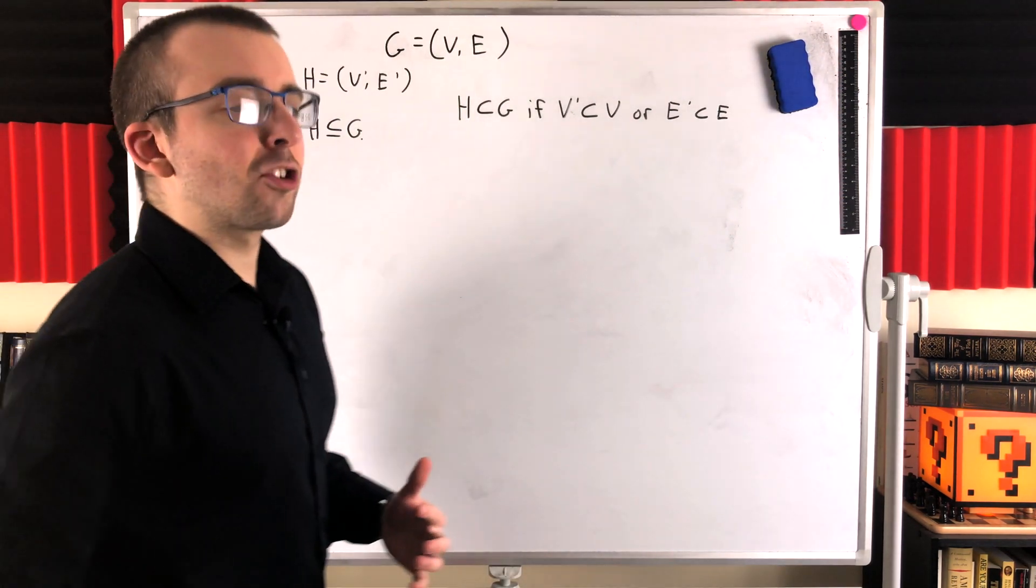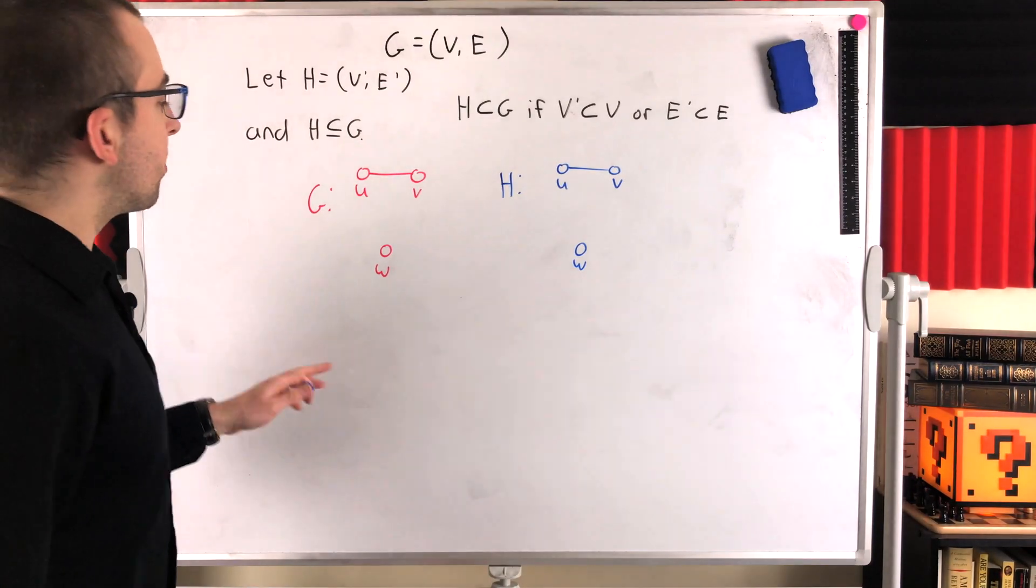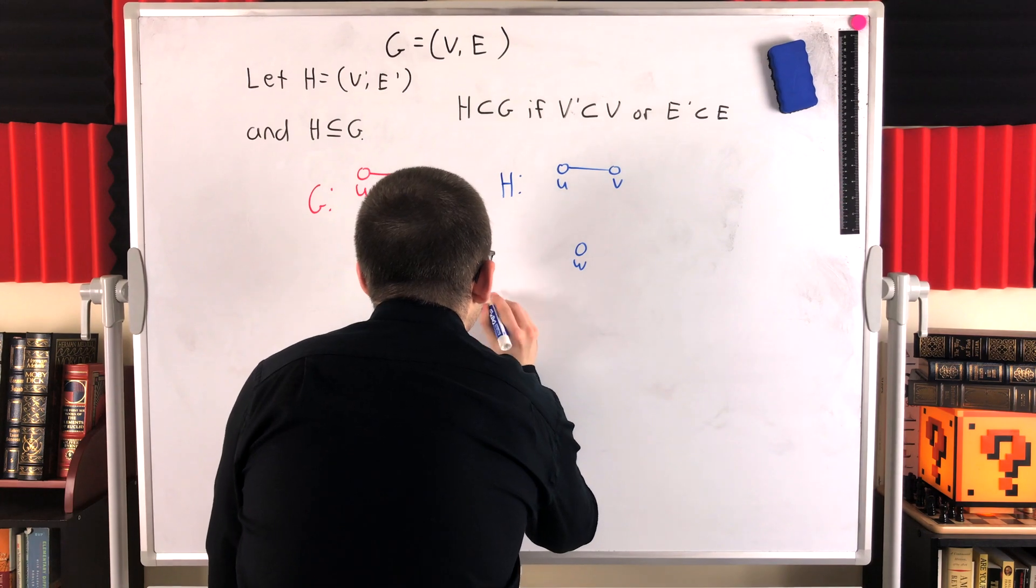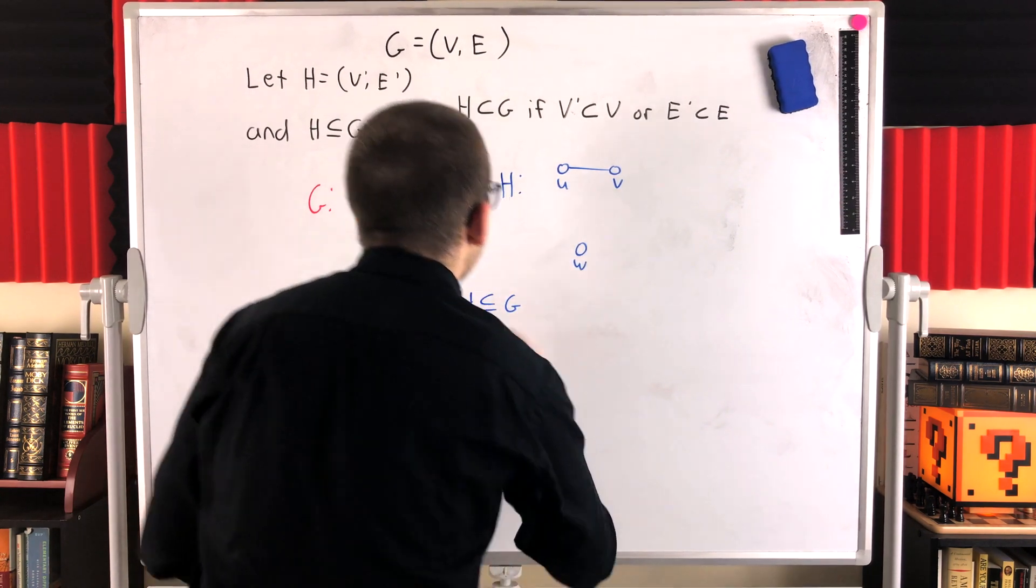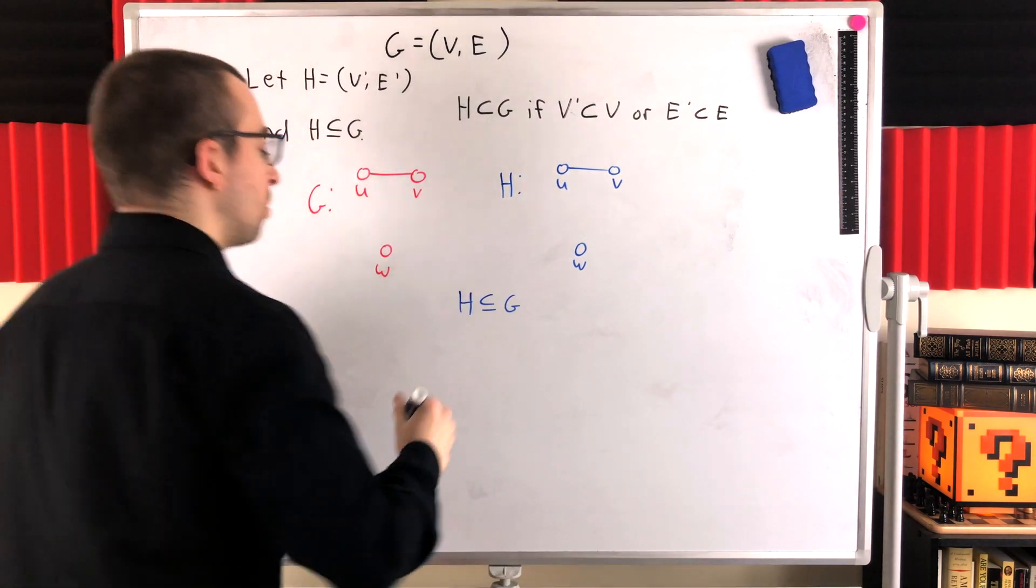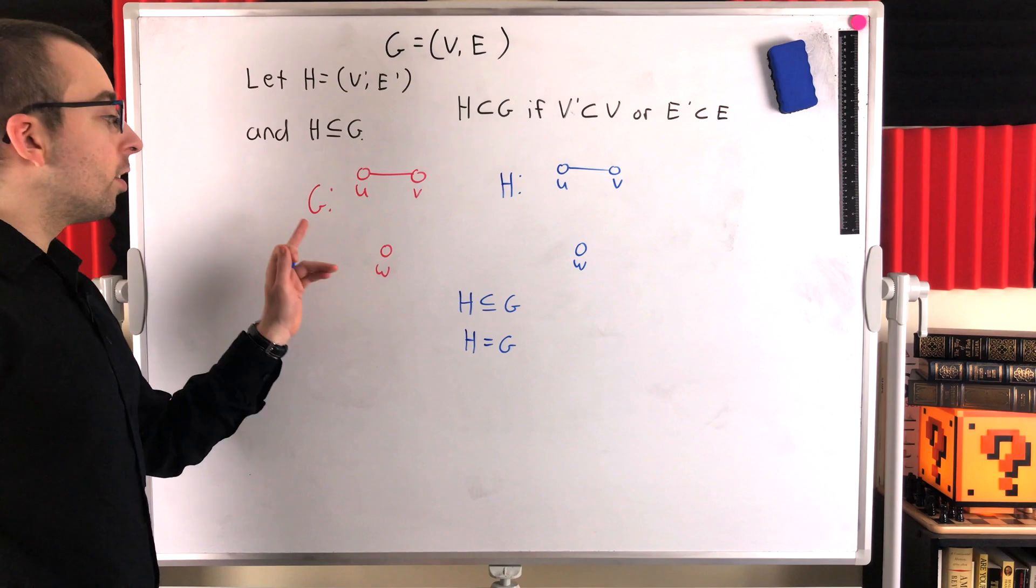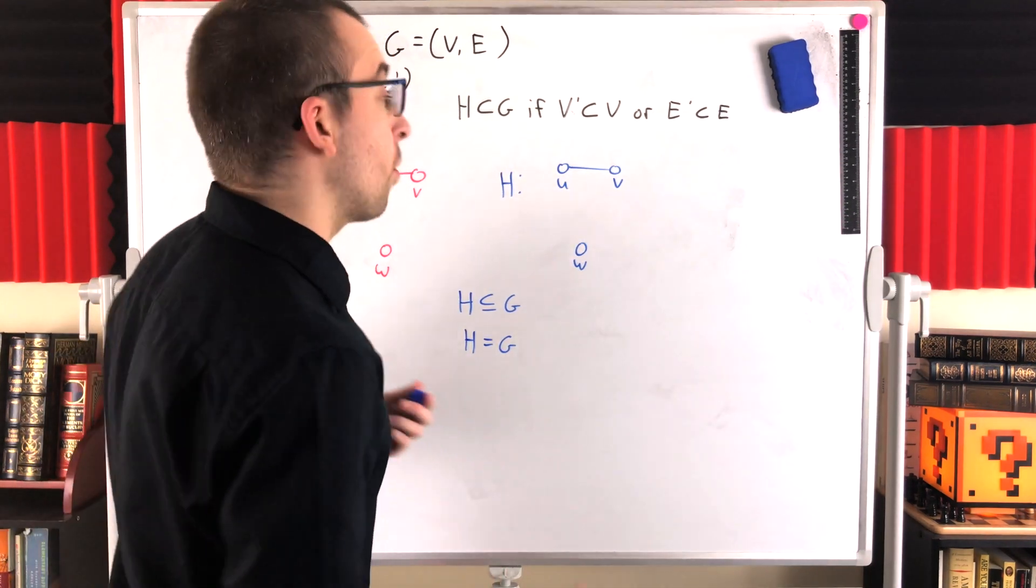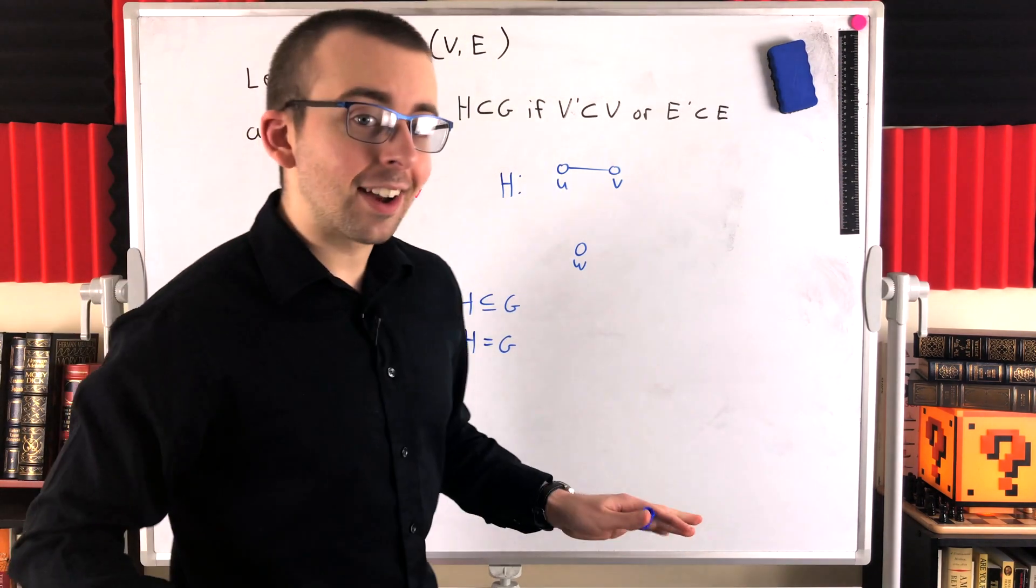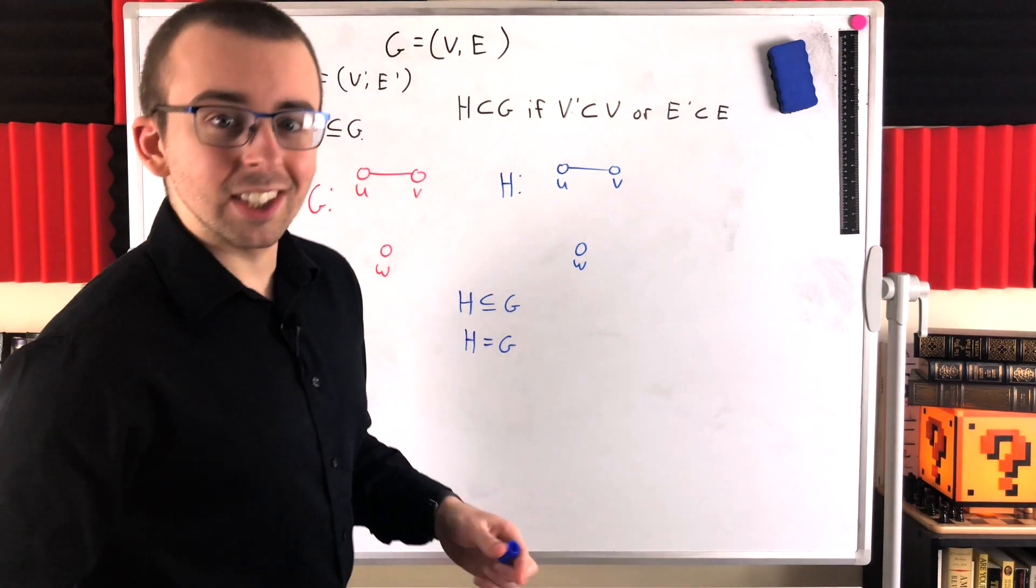So, let's actually get into some action and see some examples with some actual graphs. So, here we've got two graphs, G and H. As you might be able to tell, we could say in this situation that H is a subgraph of G. However, upon closer examination, you may be able to confirm that H is also equal to G. So, H is what we would call an improper subgraph of G. H is not a proper subgraph of G because it is equal to G.